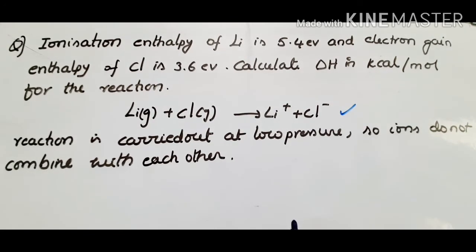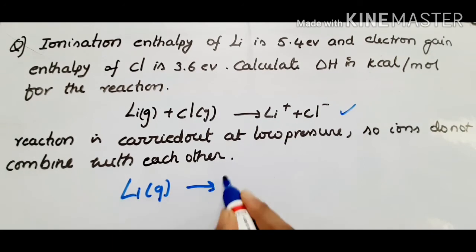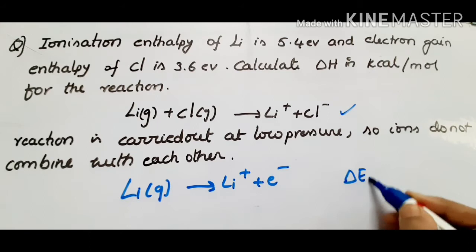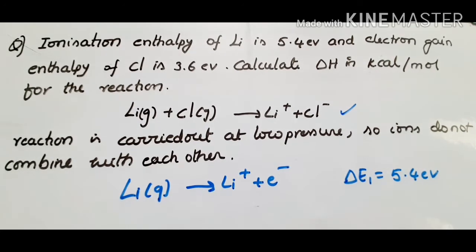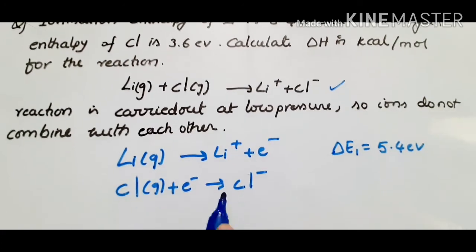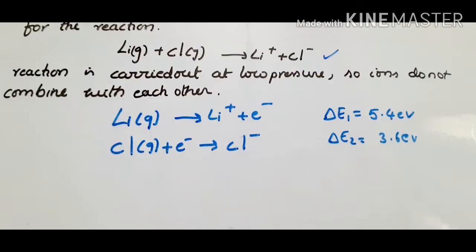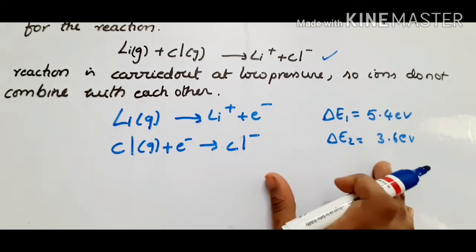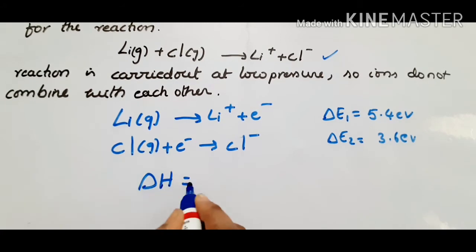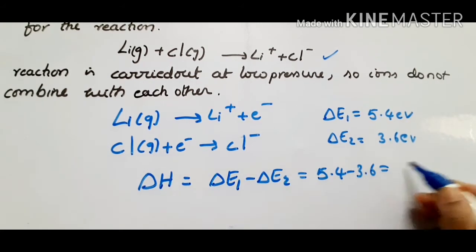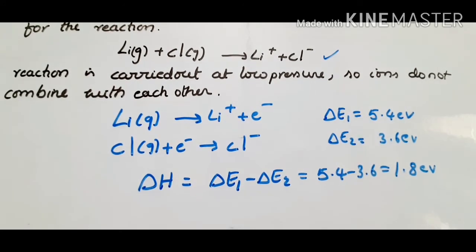When you see this type of condition, write the overall reaction as two partial reactions. First: Li(g) → Li⁺ + e⁻, where ΔE₁ = 5.4 eV. Second: Cl(g) + e⁻ → Cl⁻, where ΔE₂ = 3.6 eV (electron gain enthalpy). ΔH of the overall reaction is the energy difference between the two partial equations: 5.4 − 3.6 = 1.8 electron volts.